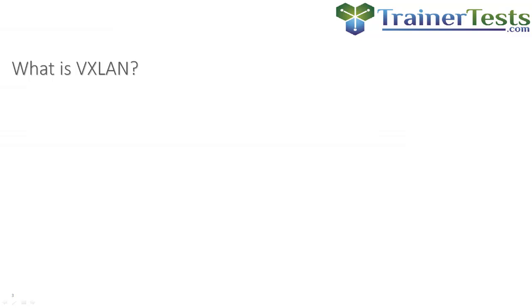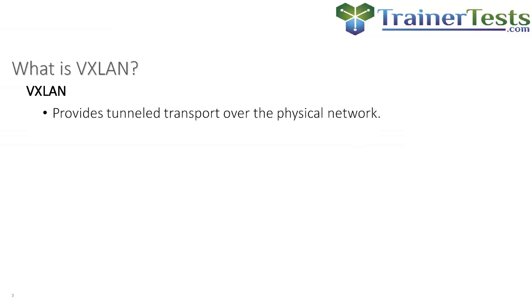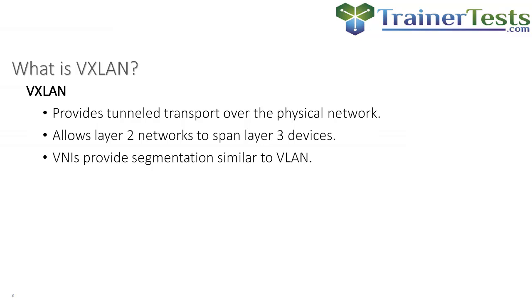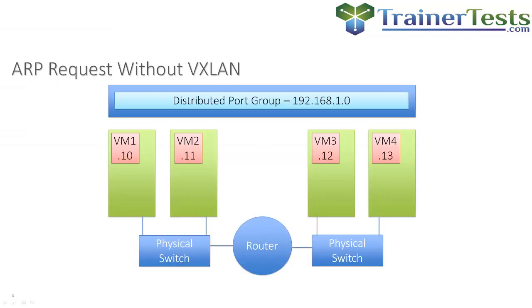Before we get to our pictures, let's talk about VXLAN a little bit. VXLAN is going to give you a tunnel to transport traffic across the physical network, and this provides certain benefits — the most significant of which is that you can create a layer two network that spans a layer three device. You can also provide logical segmentation using VNIs, similar to the way we create logical segmentation with VLANs. So let's take a look at a diagram, and hopefully that'll make these concepts a lot more clear.